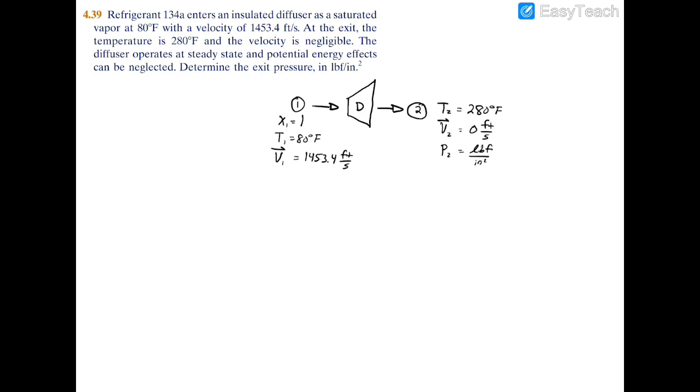We're told this is an insulated diffuser. Because it's insulated, the heat transfer coming in or out is going to be equal to 0. My approach for this problem would be to find another property at the exit that would allow us to find the pressure. If you have two properties, you should be able to find the rest of them.